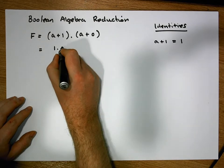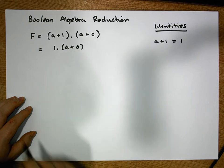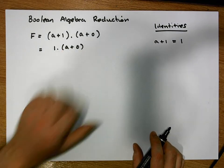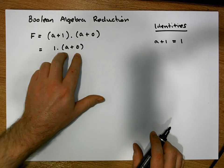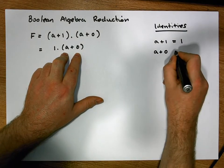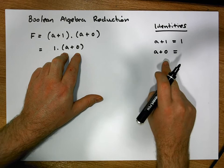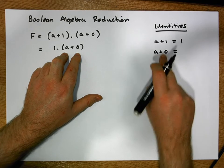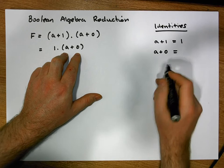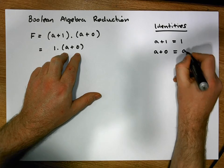So this becomes 1 AND'd with a OR'd with 0. Now looking inside this bracket, we have another expression: a OR'd with 0. This is known as the Identity Property, and it says that anything OR'd with 0 is simply equal to itself.